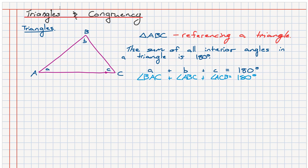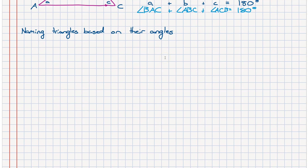This is all the information you need at Year 9 level to be able to do geometric proofs and understand the fundamental knowledge of a triangle. Now the next thing we're going to look at is the naming convention of triangles based on their angles. There are three types of triangles we reference here. The first one is a triangle where all of the angles are less than 90 degrees.